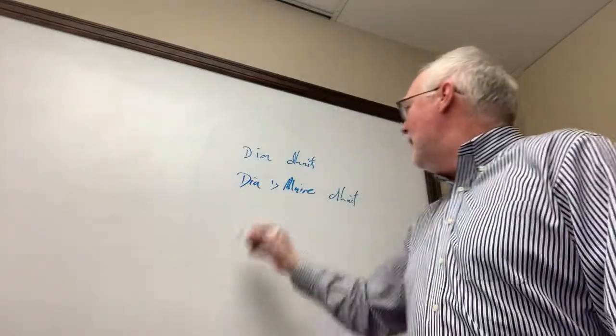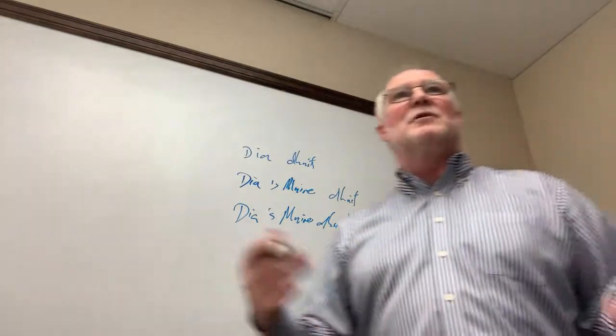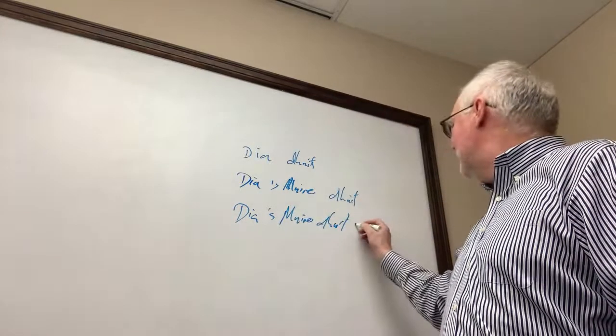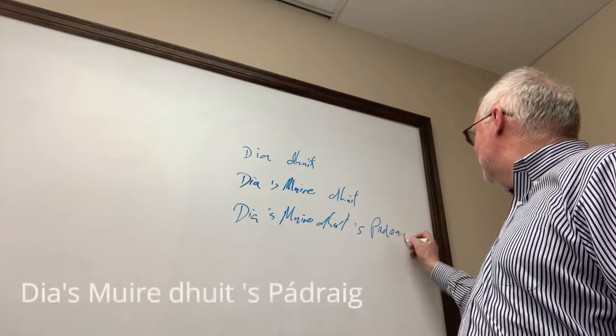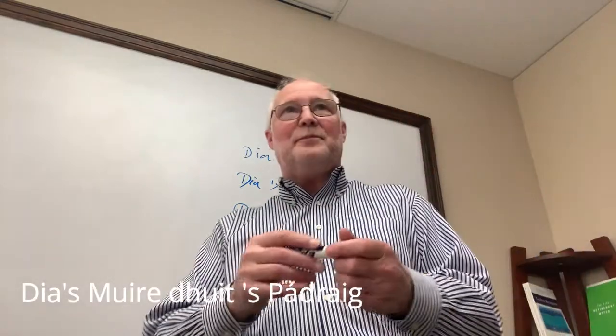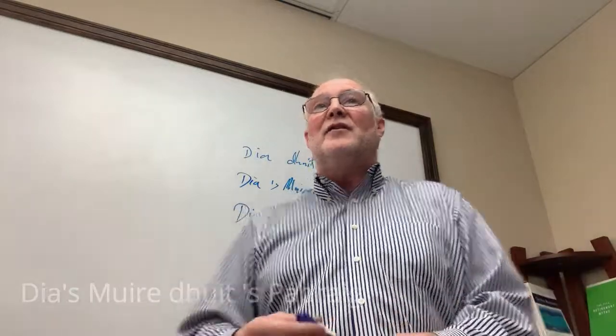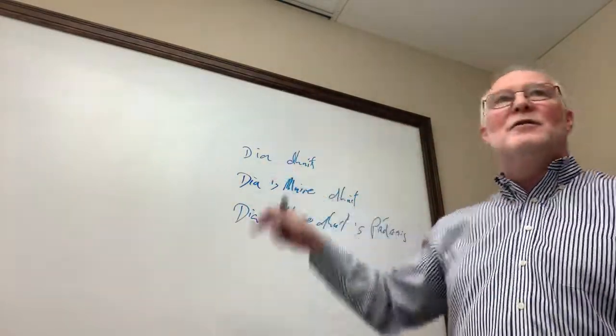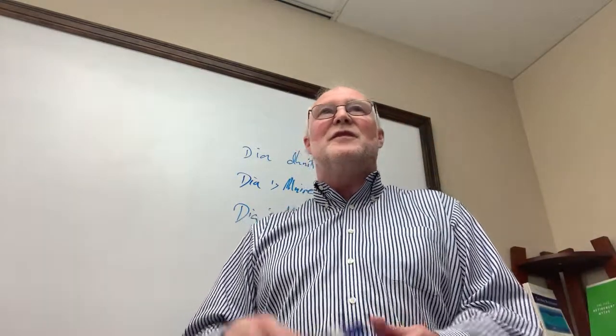If you said to me Dia's Muire duit, and then if you added something like Dia's Muire duit is Pádraig, you added Pádraig. You know who Pádraig was? He was the saint, the Irish saint. So I said Dia duit, Dia's Muire duit, Dia's Muire duit is Pádraig. So you've got choices. And depending on how much talking you want to do or how friendly you want to be with the person, you can decide.